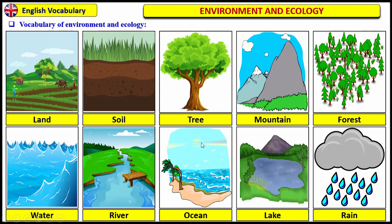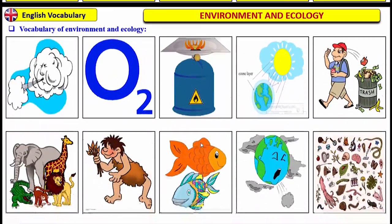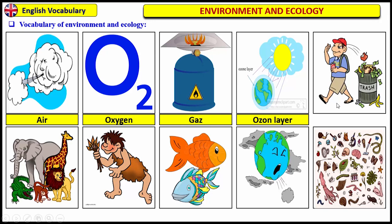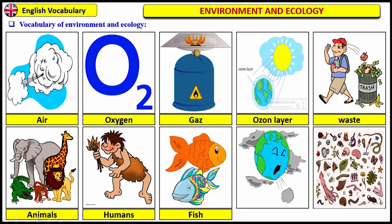Now, let's move to the second list of vocabulary items related to environment. We have air, oxygen, gas, ozone layer, waste, animals, humans, fish, pollution, living organisms.